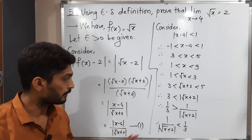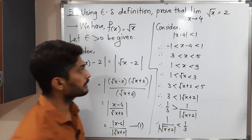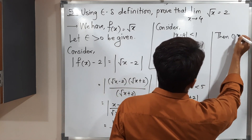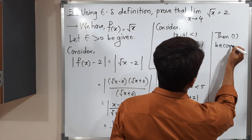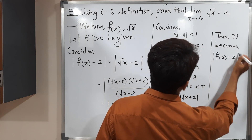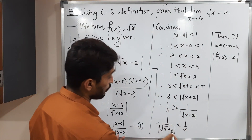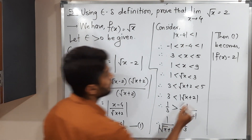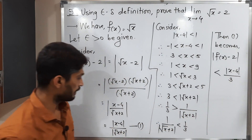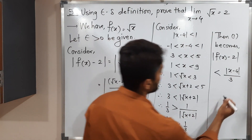Going back to equation 1: |f(x) - 2| = |x - 4| / |root x + 2|. Since 1/|root x + 2| < 1/3, equation 1 becomes |f(x) - 2| < |x - 4| / 3. Let us call this inequality number 2.